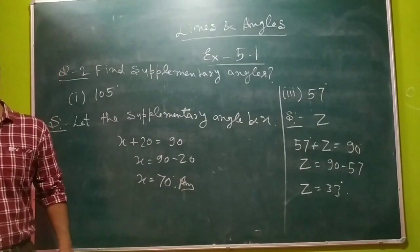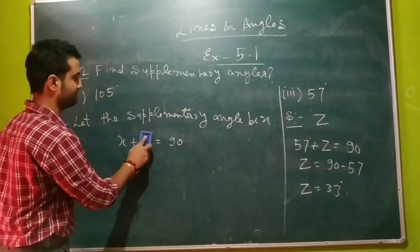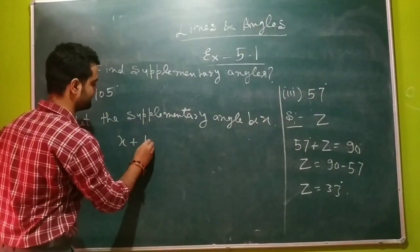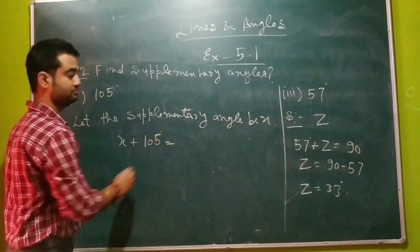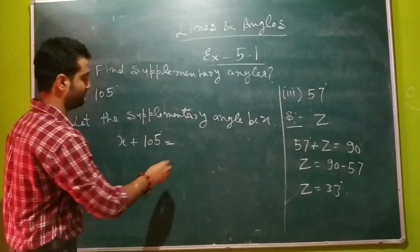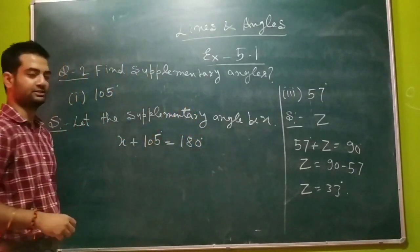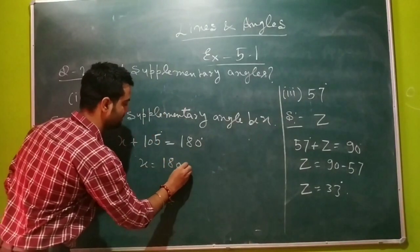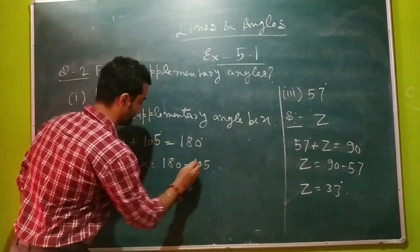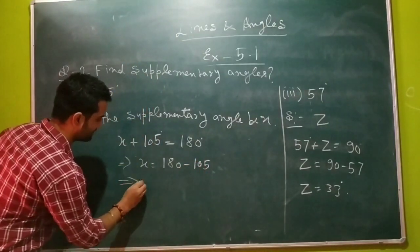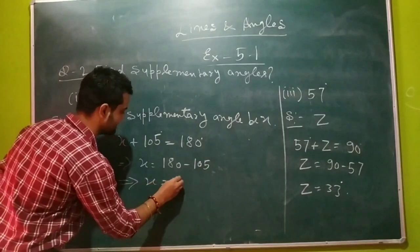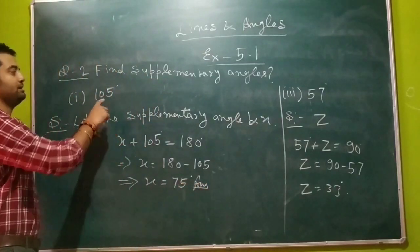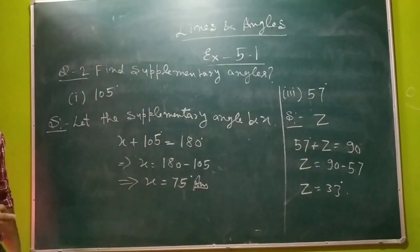Now we will form the equation. x plus 105 degrees will be equal to 180 degrees. So x will be equal to 180 minus 105, which gives us 75 degrees. So the supplementary angle of 105 degrees is 75 degrees.